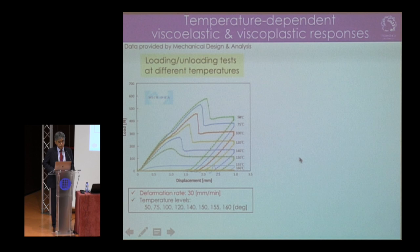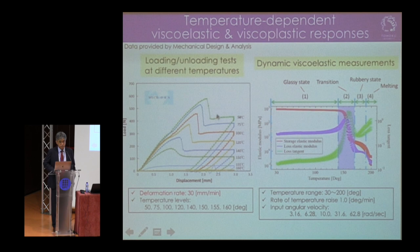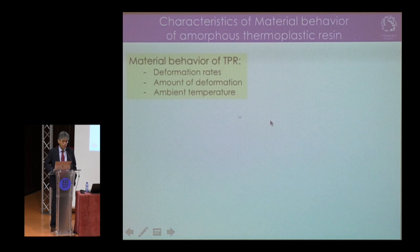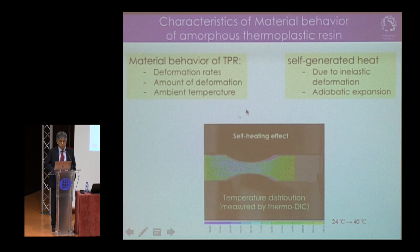By fixing the deformation rate at 30 mm per minute, we can re-examine the test data to see the temperature dependency of material behavior. This is also supported by dynamic viscoelastic measurement data, which shows the glass transition temperature and the drastic change of material properties around the glass transition region. So the material behavior in the plastic regime depends on: deformation rates, amount of deformation before unloading, and ambient temperature.